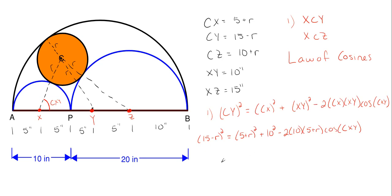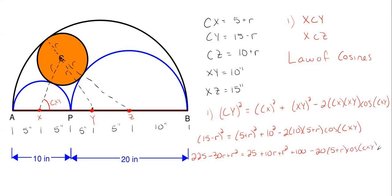We can't solve directly yet, but simplifying: left side gives 225 − 30R + R²; right side gives 25 + 10R + R² + 100 − 20(5 + R)·cos(CXY). Solving for cos(CXY), equation one becomes: cos(CXY) = (2R − 5) / (5 + R).